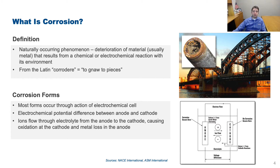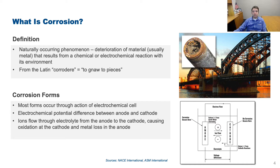That contact can be between adjacent or far-apart areas, or between two different metals with an established potential difference. This can happen with the same metal due to micro-metallurgical differences, or with two different metals with different electrochemical potentials. As shown on the screen, ions flow from the anode to the cathode within an electrolyte, causing oxidation at the cathode and metal loss at the anode. The rate of corrosion is controlled by the presence of process oxidants and/or contaminants.